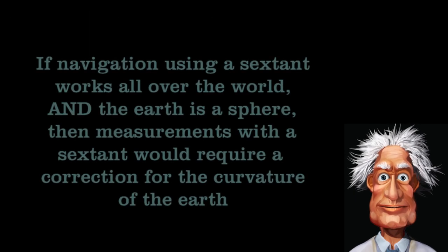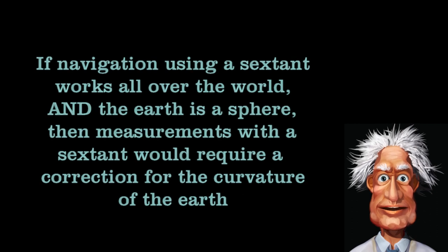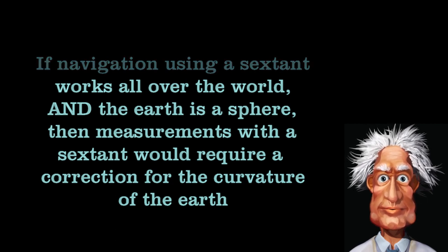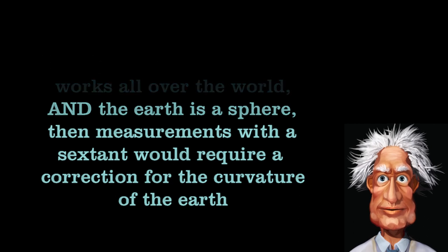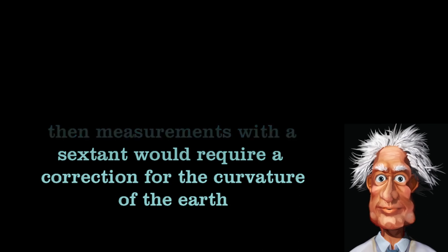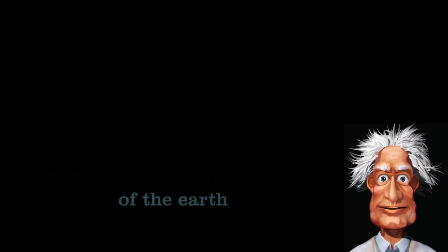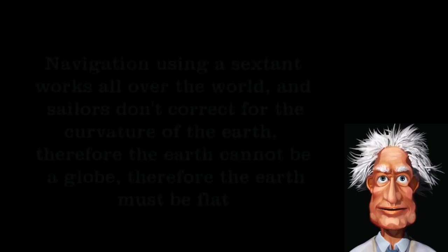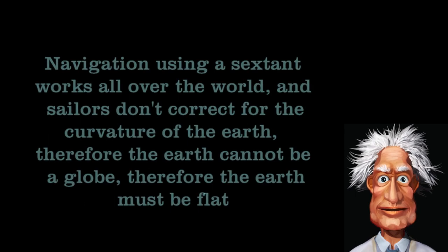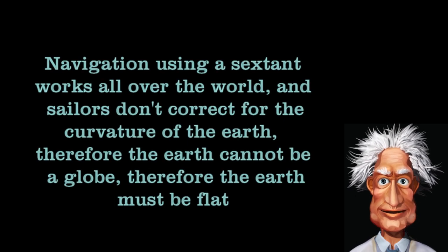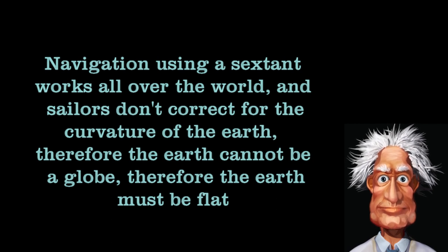In short, the measured angle with a sextant should be between the line of sight to the star and the horizontal. A sextant works relative to the horizon. On a globe, the horizon drops with distance. So, if navigation using a sextant works all over the world and the earth is a sphere, then measurements with a sextant would require a correction for the curvature of the earth. Navigation using a sextant works all over the world and sailors don't correct for the curvature of the earth. Therefore, the earth cannot be a globe. Therefore, the earth must be flat.